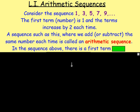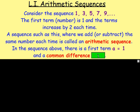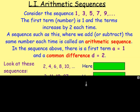In the above sequence, the first term — we call it a — equals 1. And there is what is known as a common difference, written as d. Here, d equals 2, because the terms are increasing by 2 each time.